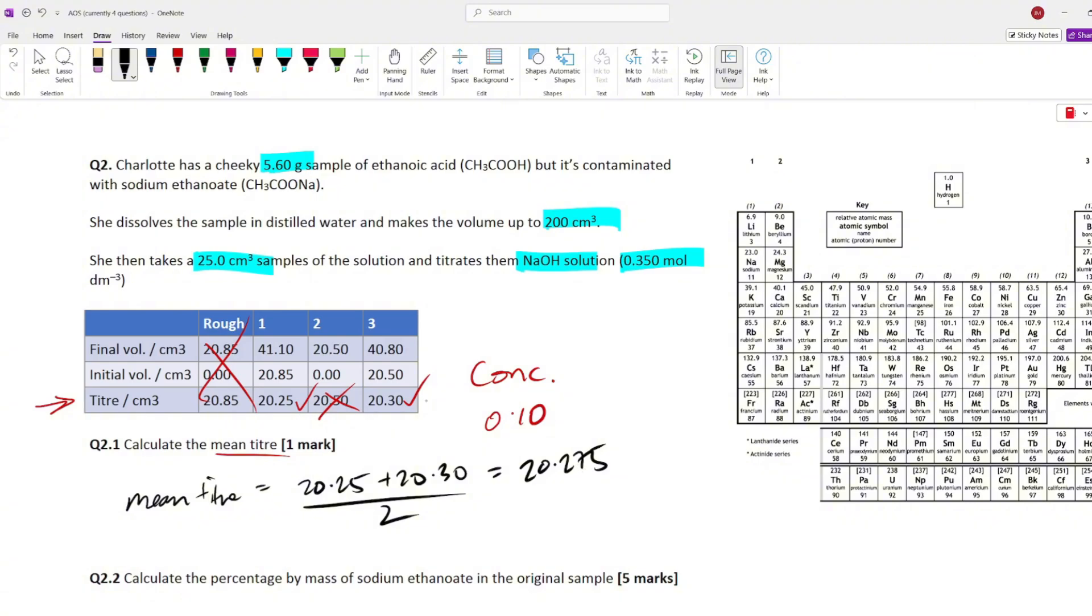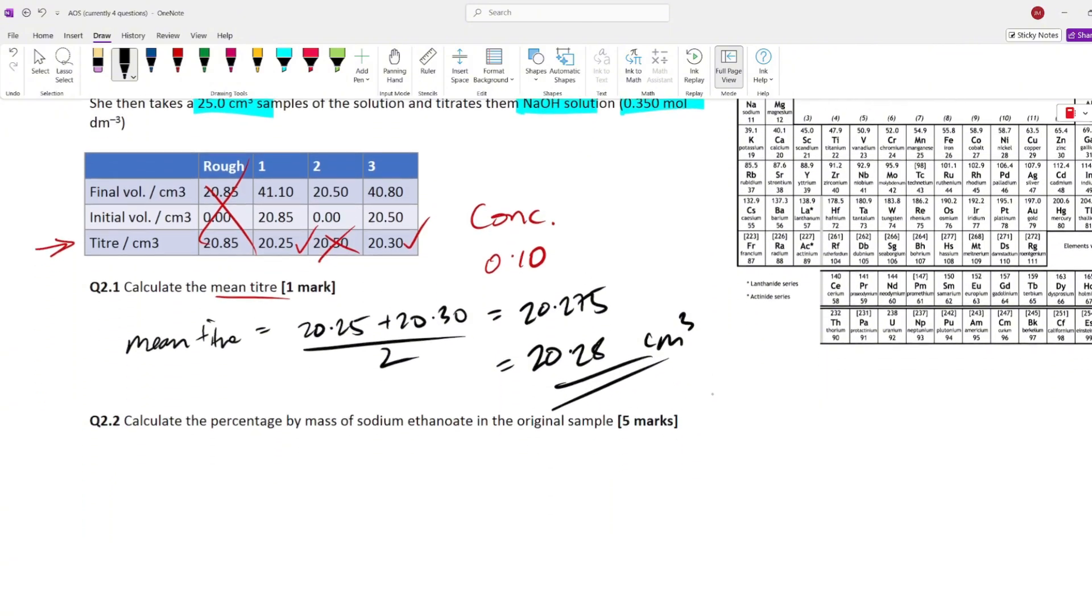Is that going to be our final answer? How many significant figures or decimal places are given in our data table? We've got two decimal places in every situation. So, I'm going to give my final answer to two decimal places to match this data table right here. So, we're going to have 20.28. That is our answer. Obviously, that's in centimeters cubed, but you don't need to show the units to get the mark here. That's a super easy one mark out of the way.